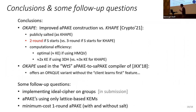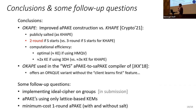To conclude: this work motivates how to implement an ideal cipher on groups. One can get lattice-based asymmetric PAKE from lattice-based symmetric PAKE and signatures via the GMR compiler, but it would be nice to do it using KEMs directly. The remaining open question is minimum-cost one-round unanimous message flow — this protocol still has two message flows. Thanks.